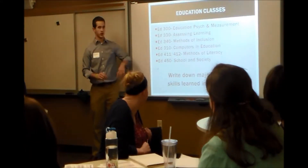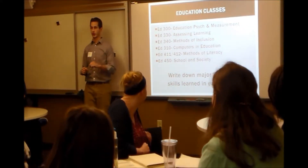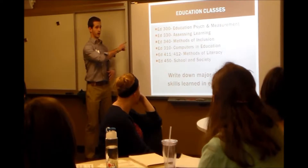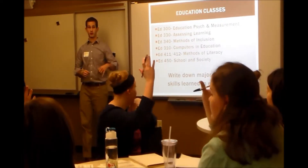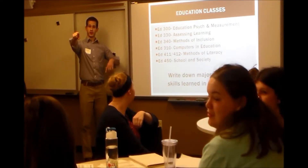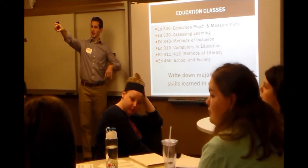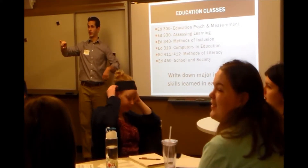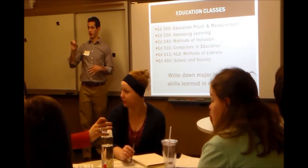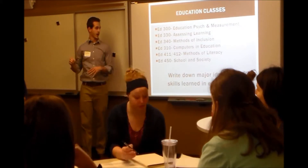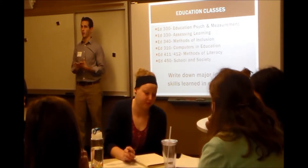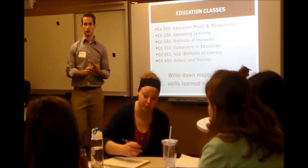What I want you to do first — maybe each table can pick a course — and you're going to write down three or four things that are really essential to that course. So if you two want to do 300, and who's in 450? You're in 450, so let's have this table do 450 since you're all in that class now. You folks back there, do 330. And 340 is that table there? 411 and 412 — 412 was the secondary, and 411 the literacy. Take about three or four minutes and think about what were the essential learning objectives or the skills that you learned in that course.